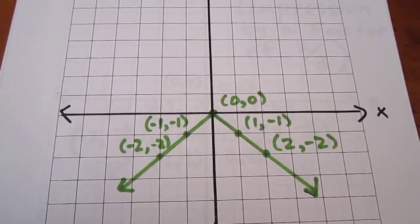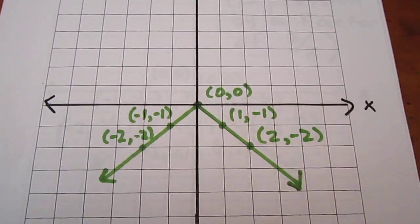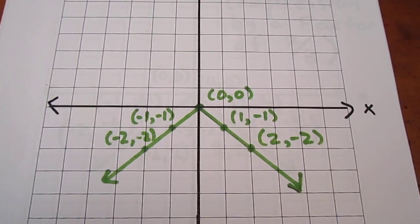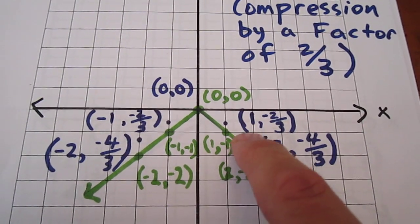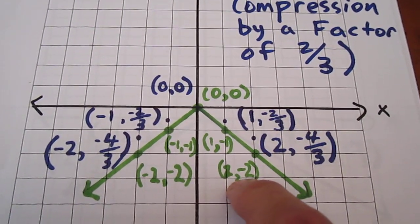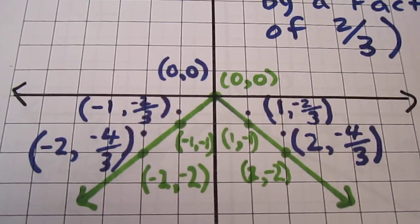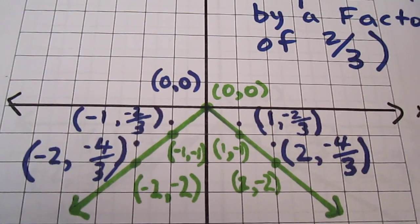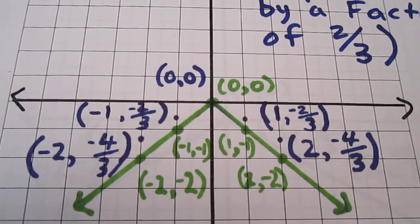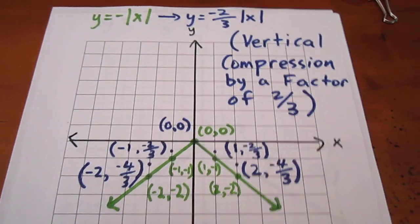The next thing we want to do is consider a vertical compression by a factor of 2 thirds. We're going to multiply every y coordinate by 2 thirds, pushing us a little bit closer to the x-axis. The point 1, negative 1 will become 1, negative 2 thirds. And 2, negative 2 — the image of that will be 2, negative 4 thirds. Every y coordinate in green has been multiplied by 2 thirds to become the y coordinate in blue. We can now discard the green curve and focus on the blue.